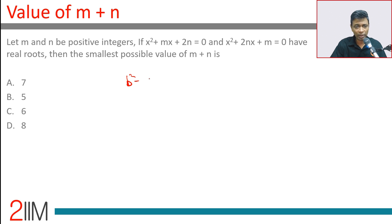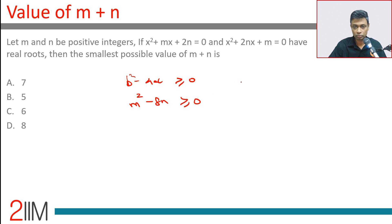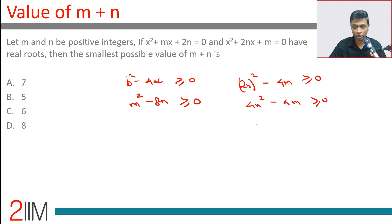For real roots, the discriminant b² - 4ac should be greater than or equal to 0. So m² - 8n ≥ 0, and (2n)² - 4m ≥ 0, which gives us 4n² - 4m ≥ 0, or n² - m ≥ 0.